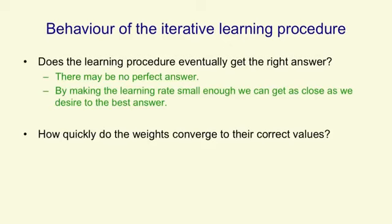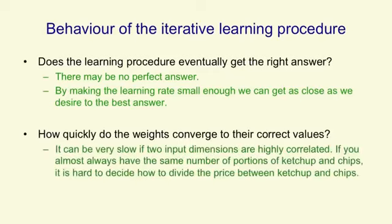Another question is how quickly do we get towards the best answer? And even for a linear system, the learning can be quite slow, this kind of iterative learning. If two input dimensions are highly correlated, it's very hard to tell how much of the summed weight on both of those input dimensions should be attributed to each input dimension.